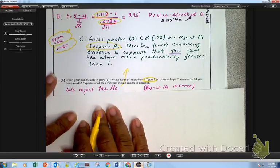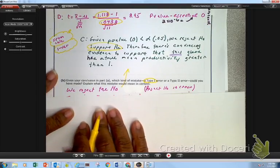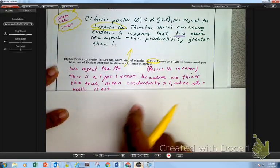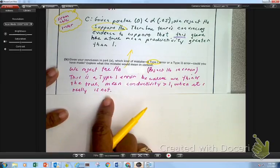Why? Because, remember, type 1, we reject the H0. So, this is a type 1 error because we think it's true. It means the conductivity is greater than 1 when, in reality, it is not.